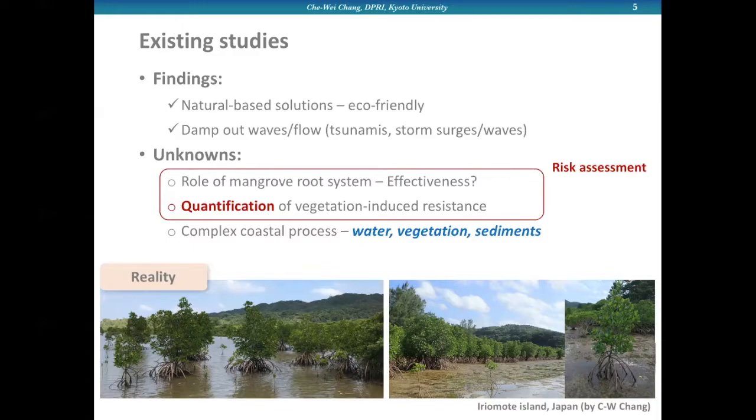In reality, as you can see from these pictures, the tree structures of mangroves and their variation in fields are more sophisticated and need to be addressed properly in both numerical and physical modeling. The complex coastal processes among multiple elements are still unknown. Our study was trying to consider more realistic mangrove structures in experimental tests and provide findings which can contribute to the later development of numerical models.